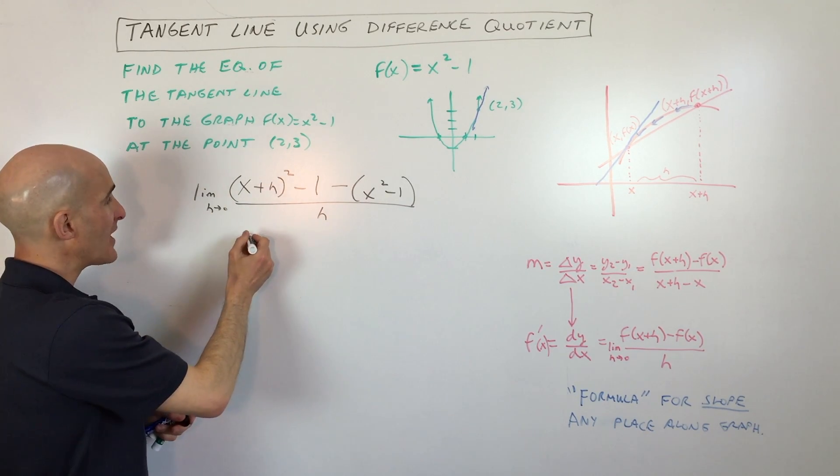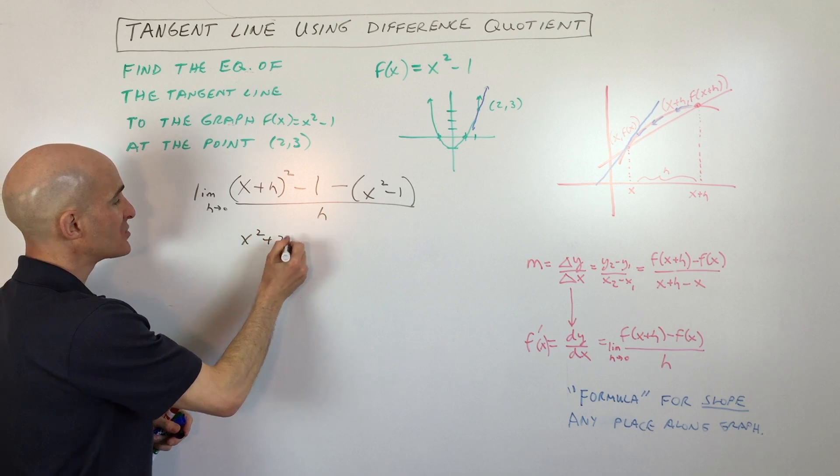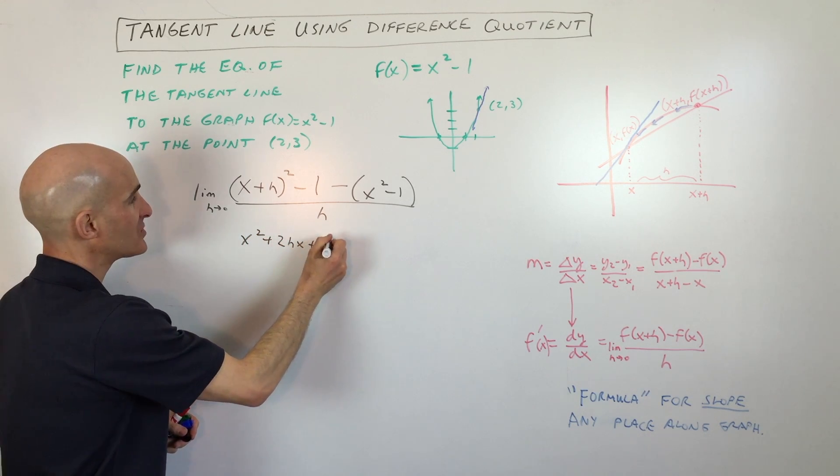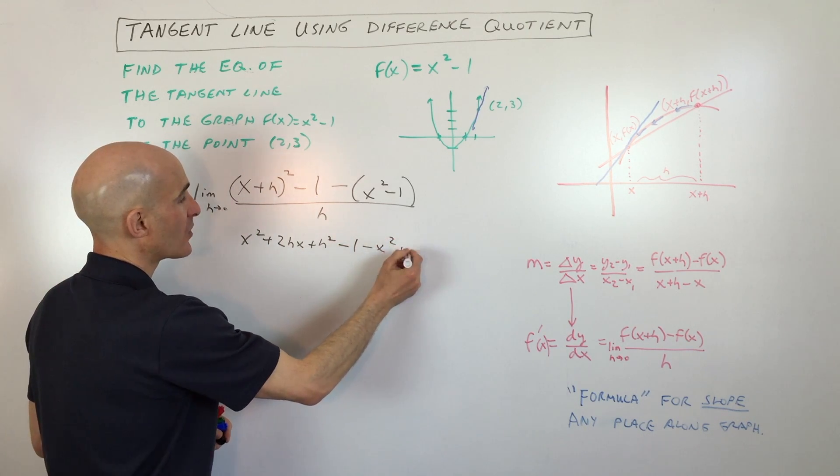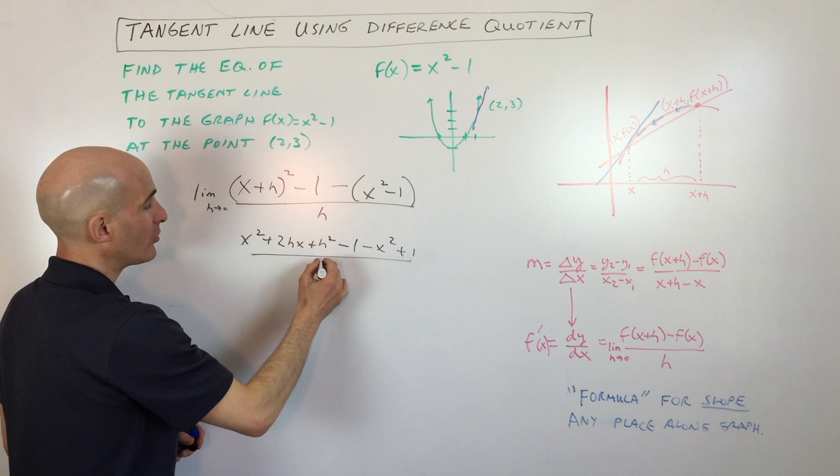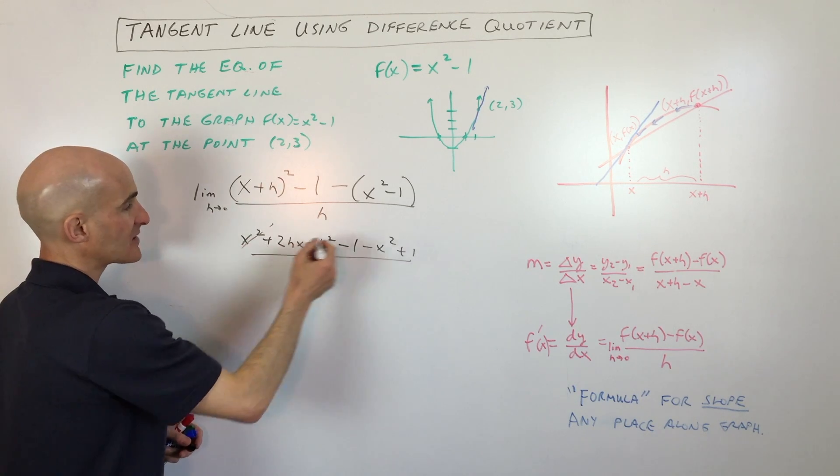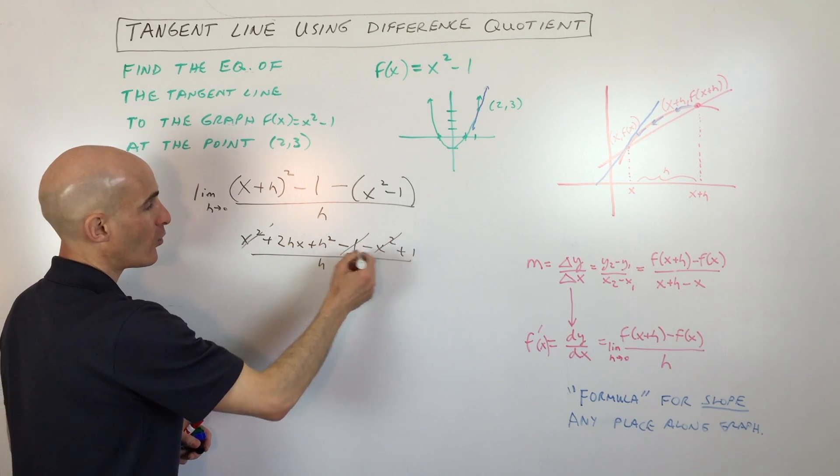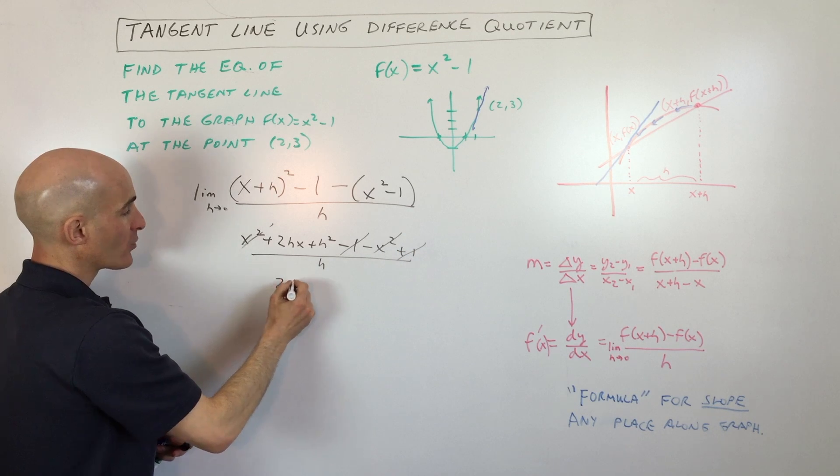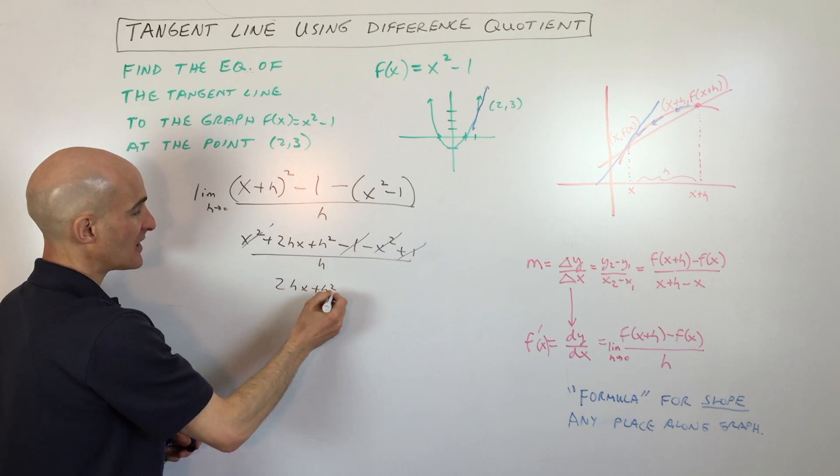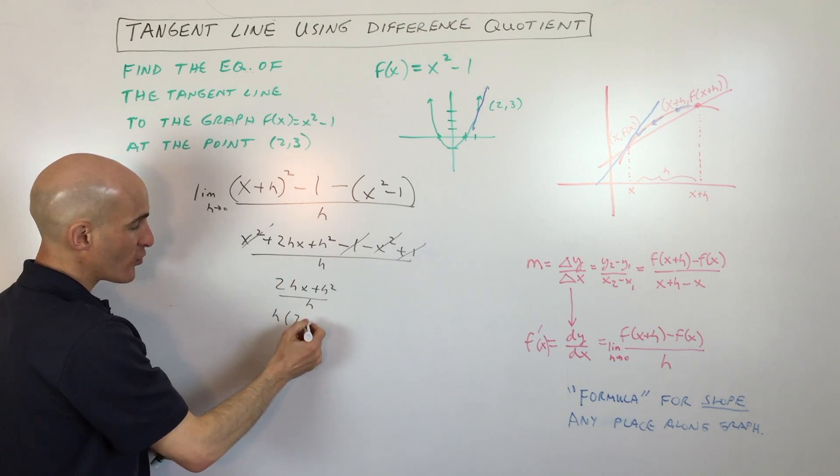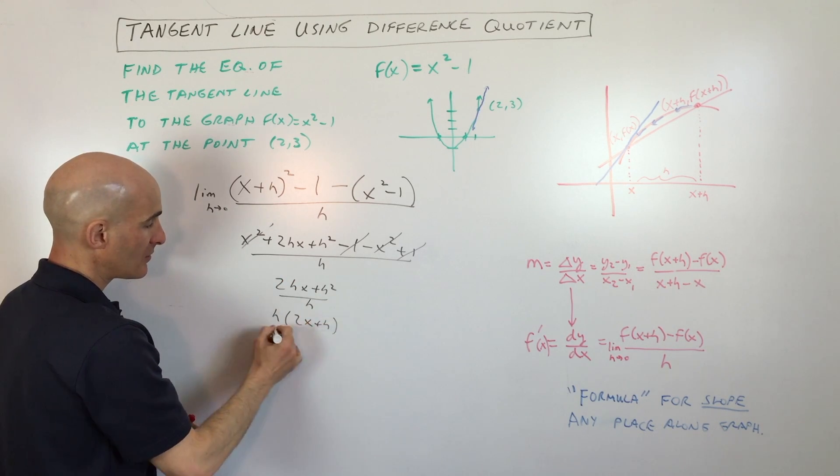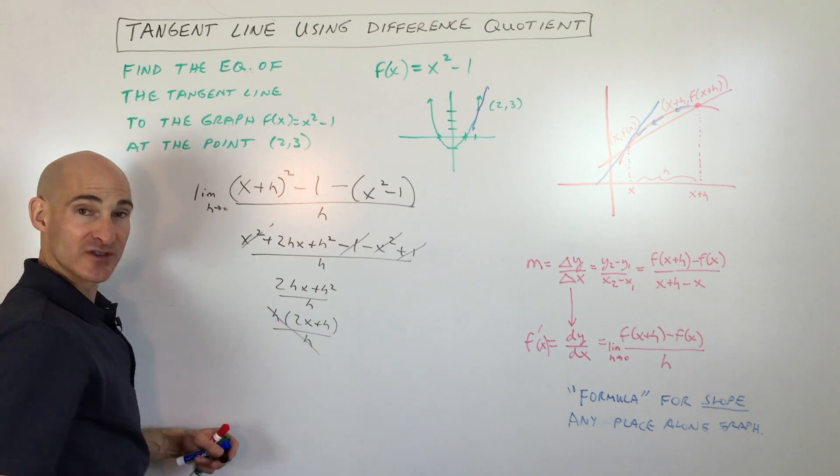But here we're going to simplify. So we've got x² + 2hx + h² - I foiled that out - minus 1 minus x² plus 1 because I'm distributing the negative, all divided by h. And notice the x² are canceling one another out. The ones are canceling one another out. And we're left with 2hx + h² divided by h. You can factor an h out of the numerator so that you can cancel those h's out.